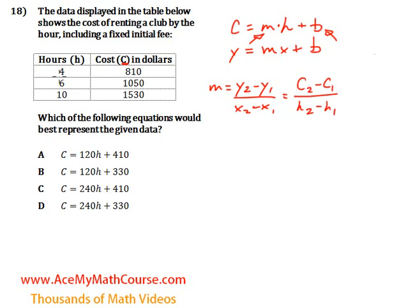So let's just use, we just need this and that. We don't need all three combinations here. We just need two of them. So I'm just going to use the fact that we know that if we rent the club for four hours we're going to pay $810, and if we rent it for six then the cost is $1,050. So this will be h1, that will be h2, this will be c1 and that'll be c2.